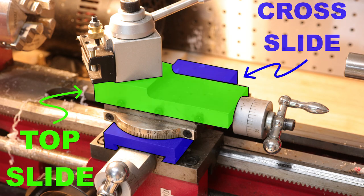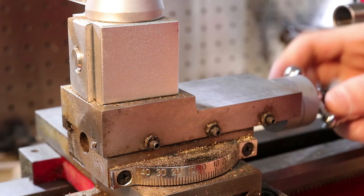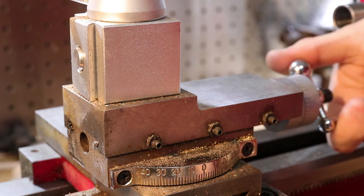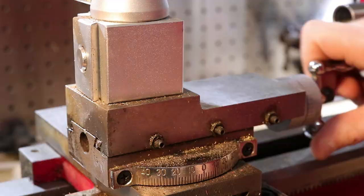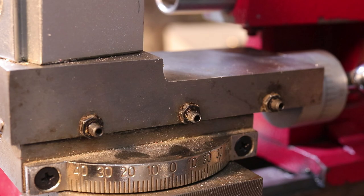The cross slide and top slide are essentially a dovetail joint with a screw to slide them backwards and forwards. The dovetail joints aren't the same size to allow for movement. To make sure they don't wobble around too much, a little wedge is placed in the gap and pressure is applied on the wedge by three little Gibbs screws.